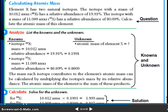So calculating atomic mass. Element X has two natural isotopes. The isotope with a mass of 10.012 amu has a relative abundance of 19.91%. The isotope with the mass of this. So you can calculate like this: isotope, mass, relative abundance. And then you have to do calculations.